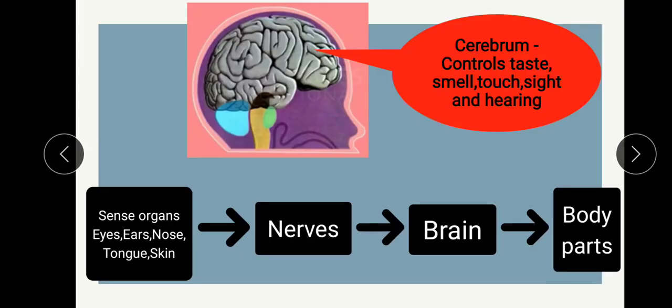I already told you about the cerebrum, which is a part of the brain. This part of the brain controls all the senses: taste, smell, touch, sight, and hearing. Now let's see how information is passed through the body. Sense organs send a message to the brain, and the brain sends back a message to the body parts to react. How is the information sent from the sense organs to the brain?